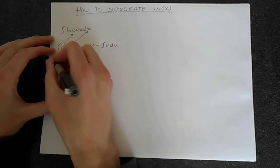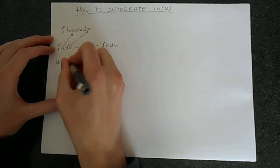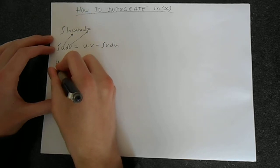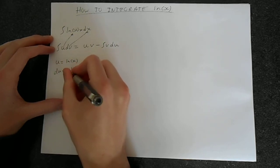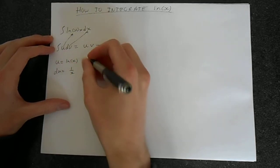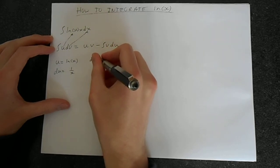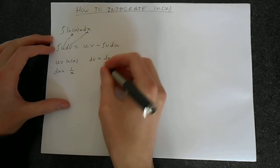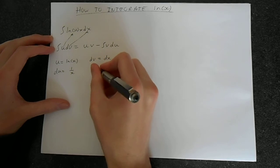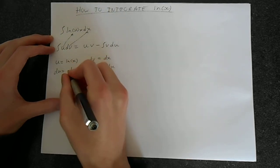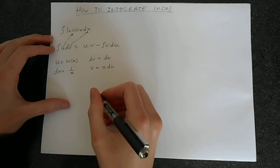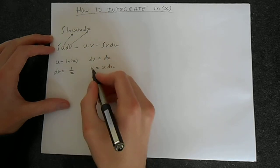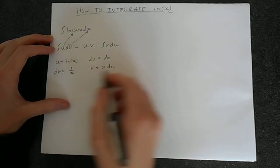So, u equals ln x, and du equals 1 over x. And dv, we're going to put as dx, and then v equals x. So here we've differentiated, and here we've integrated. To get u to du, and then dv to v. This is not difficult here.